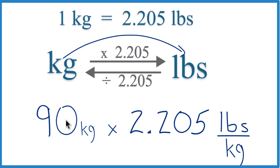And this way, when we multiply, kilograms on the top and the bottom cancel out, and we're left with pounds.